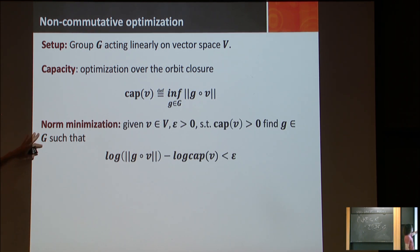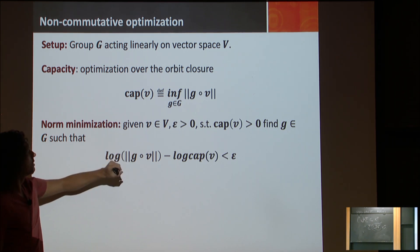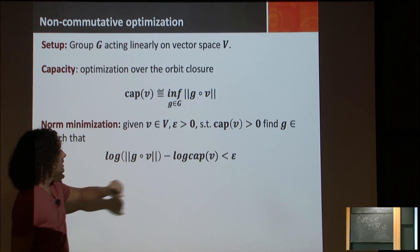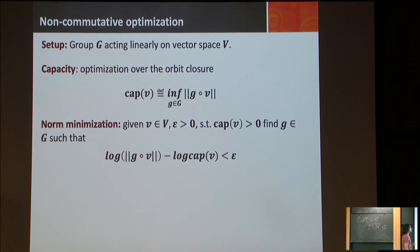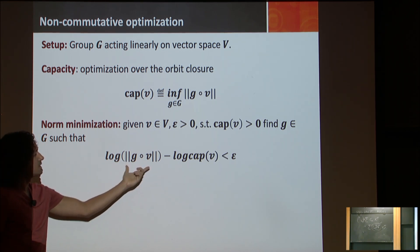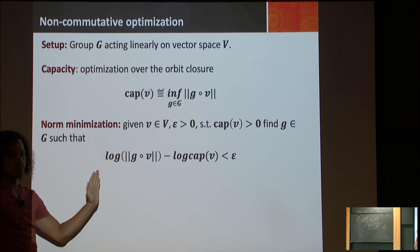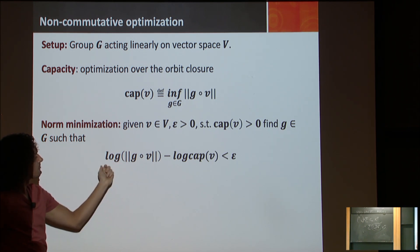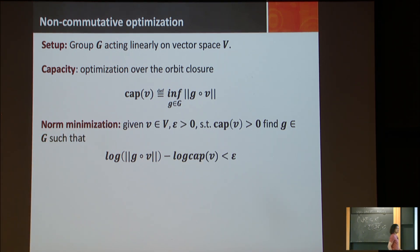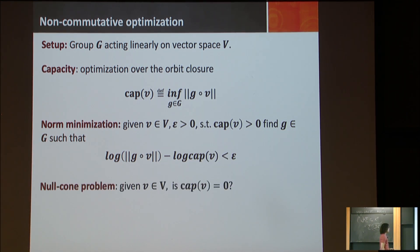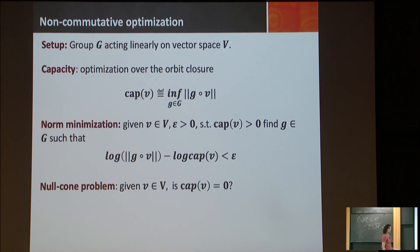Our norm minimization problem: given V in a vector space and parameter epsilon, with the promise that the capacity of V is bigger than zero — so V is not in the null cone — the task is to find an element G of the group such that the log of the norm of G·V is within epsilon of the capacity. So that's what this equation says: the norm is a 1 plus epsilon multiplicative approximation of the capacity. If the capacity were zero, this would be minus infinity, so that's why we have this promised problem.